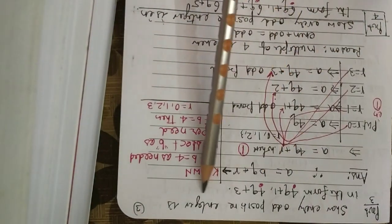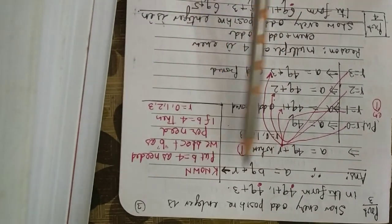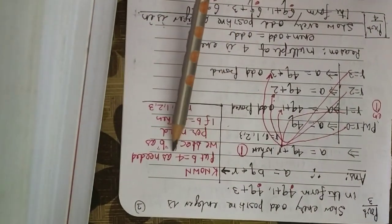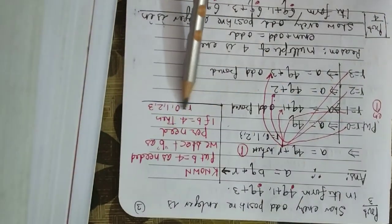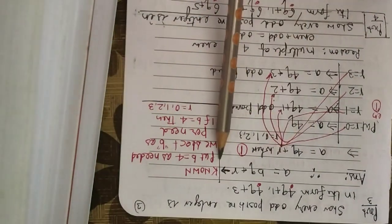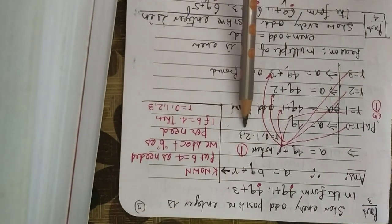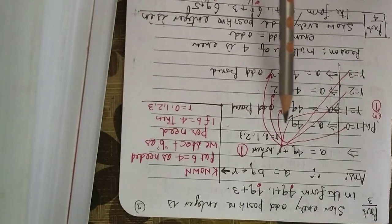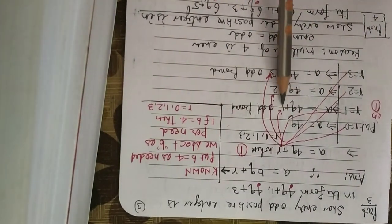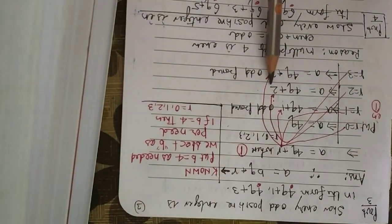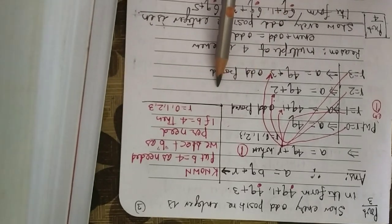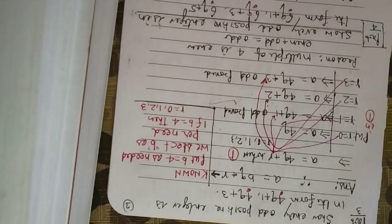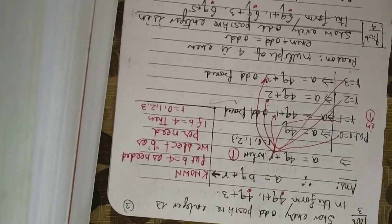Problem 3: Show that every odd positive integer is in the form 4q + 1 or 4q + 3. Using A = BQ + R, put B = 4; remainders will be 0, 1, 2, 3. So A = 4q + r. Putting r = 0 gives 4q (even, not required). Putting r = 1 gives 4q + 1 (odd, proved, because even plus odd is odd). Putting r = 2 gives 4q + 2 (even, not required). Putting r = 3 gives 4q + 3 (odd, proved). Multiple of 4 is even, and even plus odd is odd.